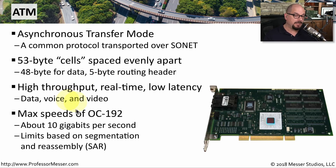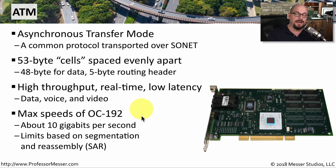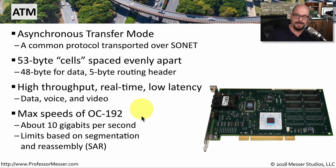The speeds of ATM had a maximum of OC-192, or about 10 gigabits per second, which at the time were extremely fast communication speeds. These speeds were often limited by the segmentation and reassembly that had to occur, or the SAR, because ethernet frames are much larger than the 53-byte cells. We had to split our ethernet frames up into smaller pieces, put them inside of the ATM network, and then reassemble all of those frames on the other side. ATM gained market share in the 1990s, but the technology faded away as IP-based technologies became more popular.